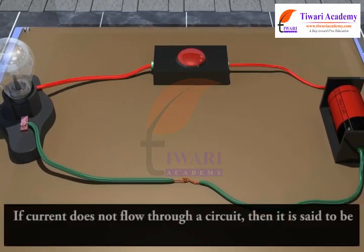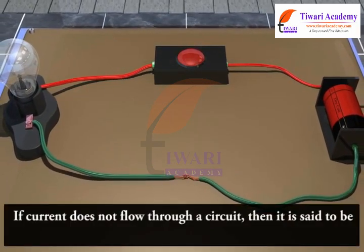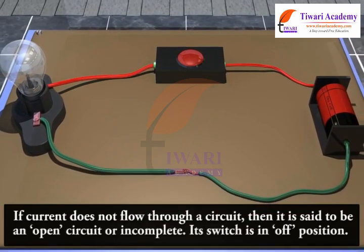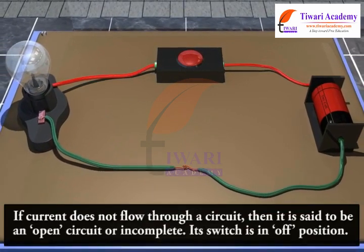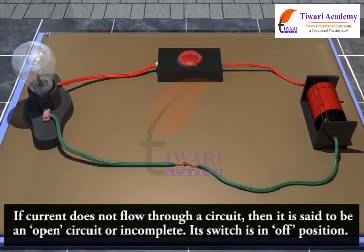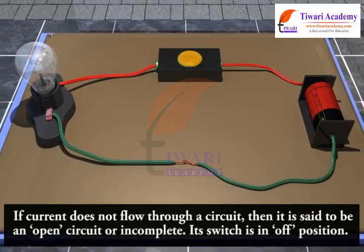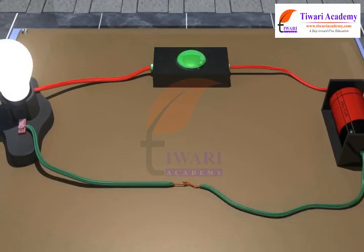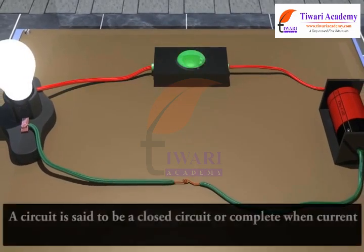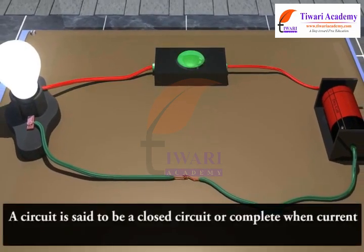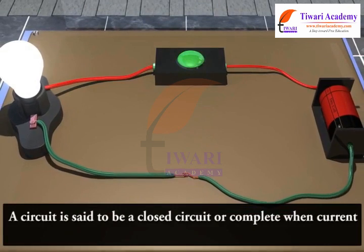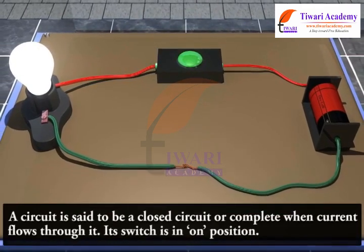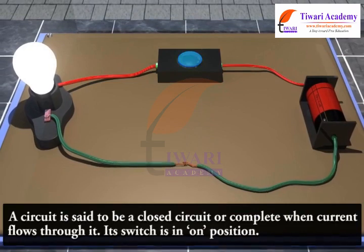If current does not flow through a circuit, then it is said to be an open circuit or incomplete, and its switch is in the off position. A circuit is said to be a closed circuit or complete when current flows through it, and its switch is in the on position.